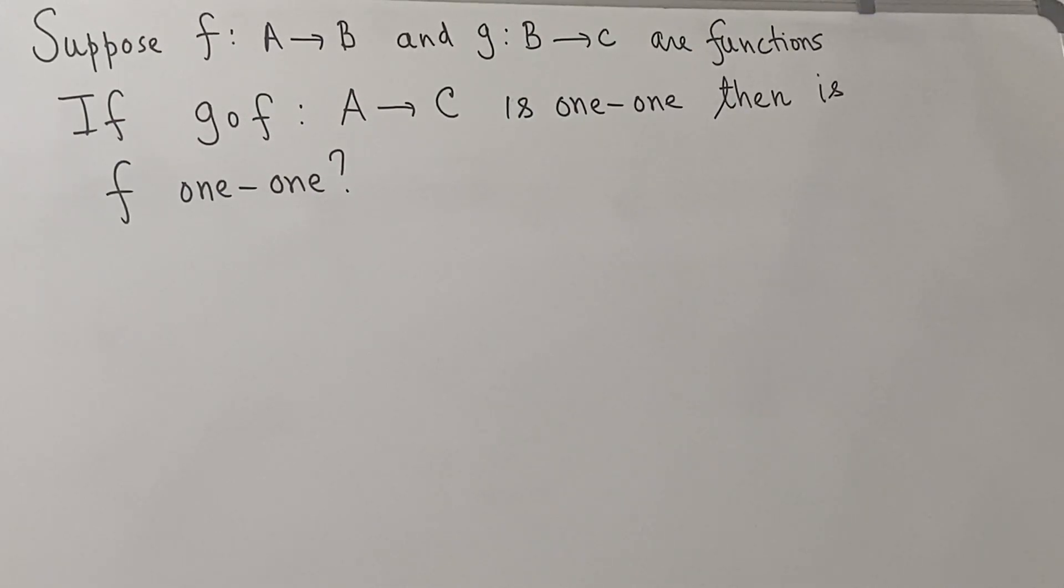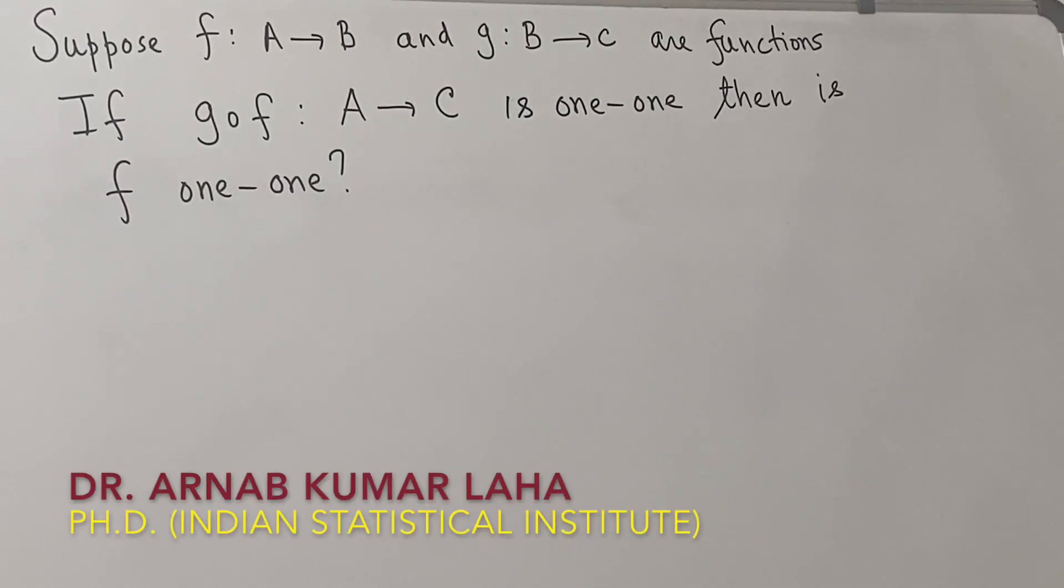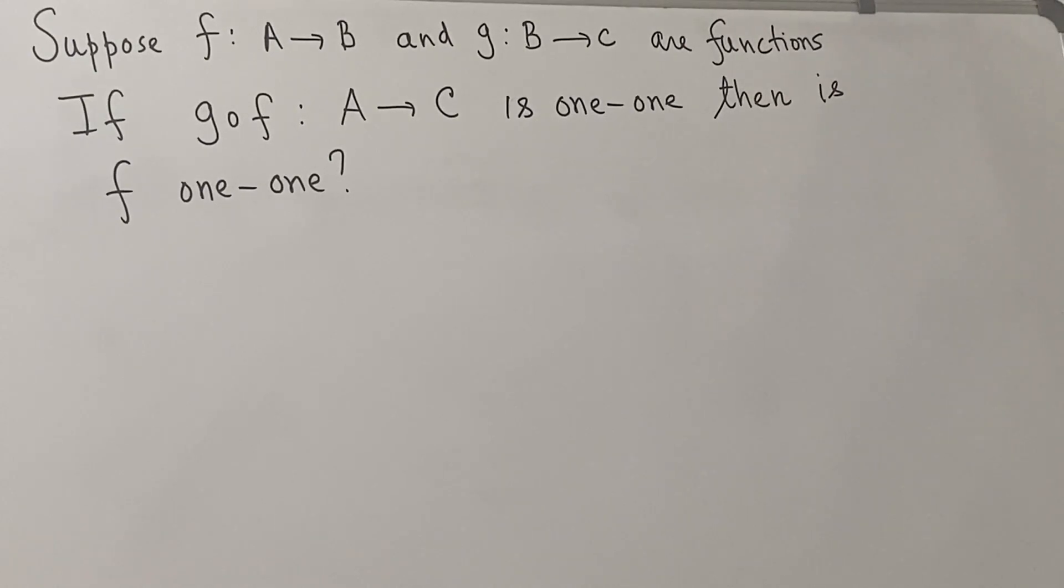Suppose f: A→B and g: B→C are functions, and it is known that the function g∘f: A→C is a one-to-one function. Then is it true that f is one-to-one? Let us investigate this question.